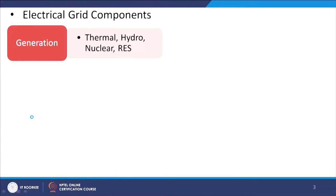The different components of the electrical grid are: generation, which is either thermal, hydro, nuclear, or very recently renewable energy sources. Transmission is either high voltage AC or high voltage DC. The distribution system is mostly AC type, but in recent times people have started talking about DC type too. Consumers are industrial, commercial, and residential or domestic types.